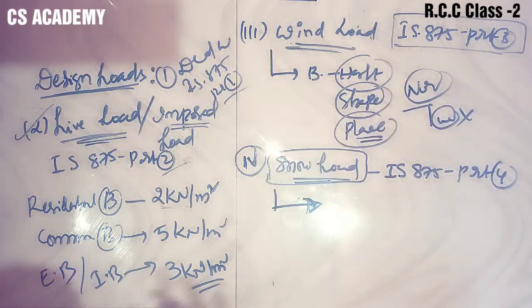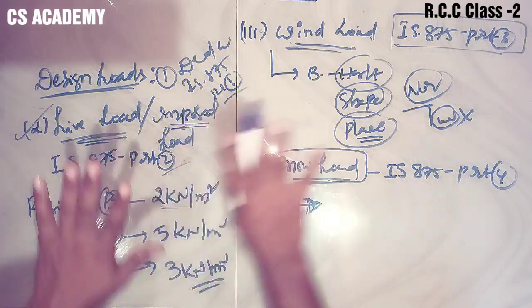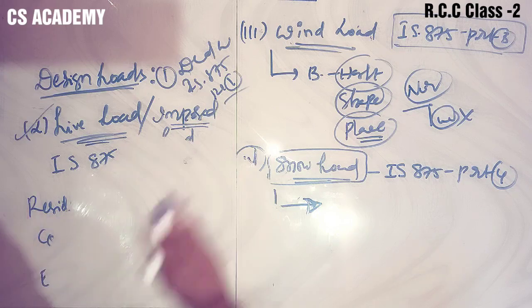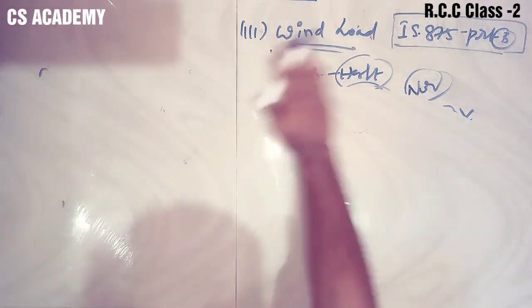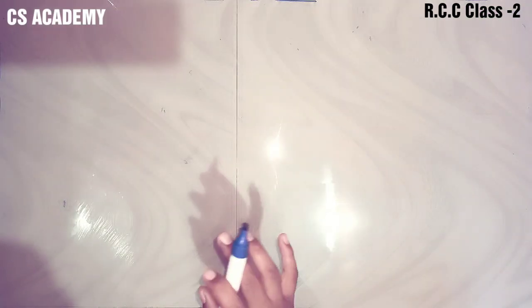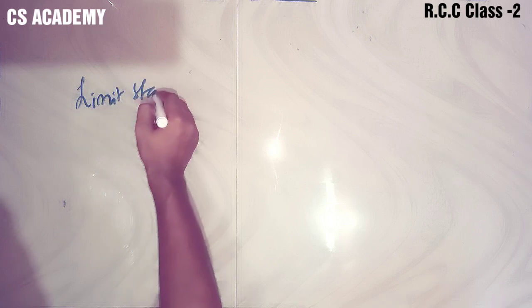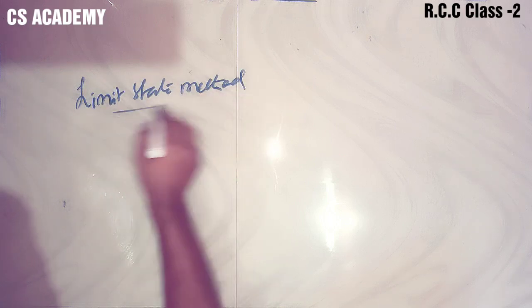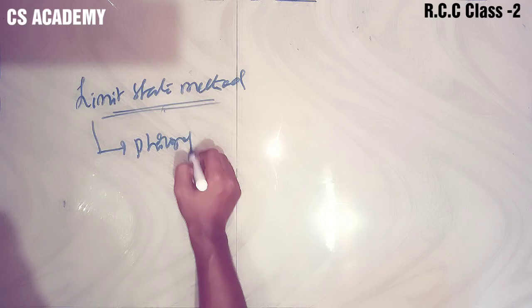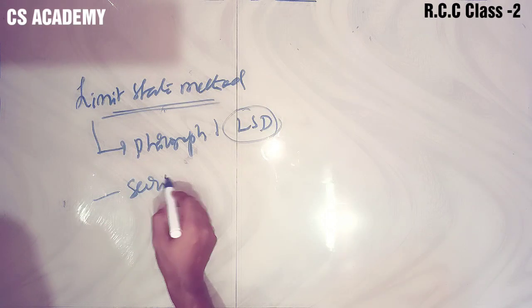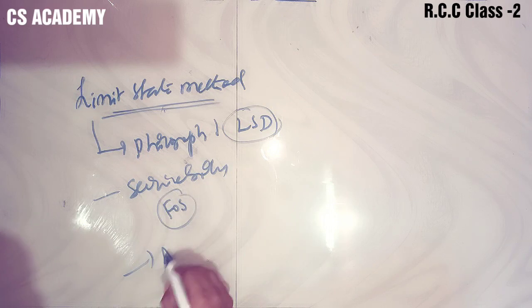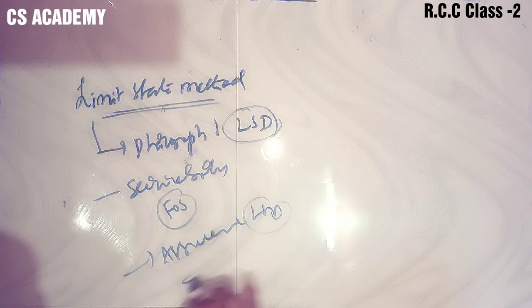So you will see the four types of design loads. I hope you got this point clearly. There are three types of design methods. The best method is the limit state method. In this session we discussed the basics of design and the basics of design loads. In the next session we will discuss the limit state method - its philosophy, serviceability, factor of safety, and assumptions in limit state design - each and every point.